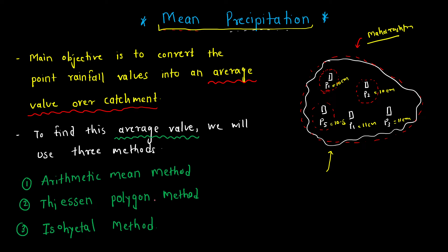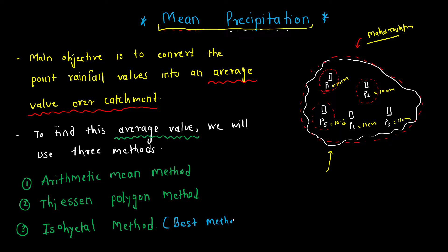In the mean precipitation topic we have covered the first two methods — the arithmetic mean method and the Thiessen polygon method — in previous videos. Now in this video we are going to see the last one, that is the isohyetal method, which is the most accurate method among these three.